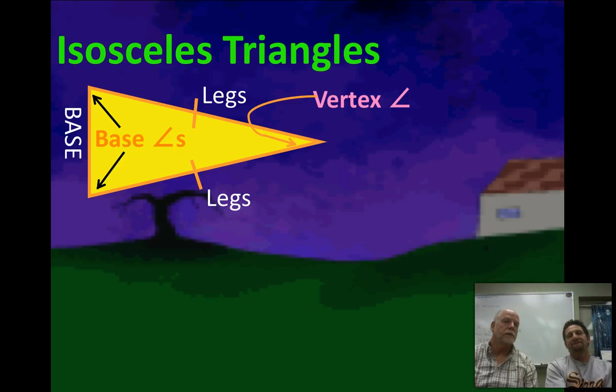So we're talking about isosceles triangles. And there are very specific parts, kind of like we talked about with right triangles. There are very specific parts to an isosceles triangle. Typically that triangle would be set up on its base and drawn that way. The base is the side that's not congruent to one of the other ones. So the two legs are the congruent pieces for the isosceles.